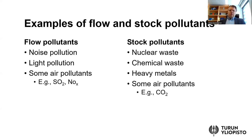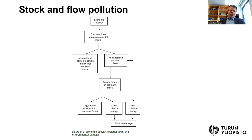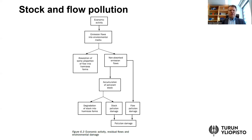In the textbook by Perman et al., there is a flowchart that helps understand the linkage between economic activity and pollution damage. Starting from the top, some economic activity — for example, a production plant — emits some pollution that flows into the natural environment. There is also the concept of environmental media: the emission can flow through water into the water system, or through air, so there is always some medium transporting the emission flow into the environment.